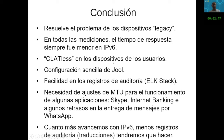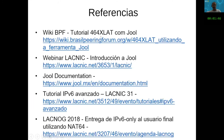The devices that users have don't need any kind of setup — they are CLAT-less, working through the virtual machine. The less interference with the user's machine, the better. The configuration with Jool is very simple, and auditing records in ELK are a great facility. We do need to allow some extra delay on the SPN and adjust the MTU, particularly for some applications — namely Skype, internet banking — and there is some delay in WhatsApp message delivery. The more devices are on IPv6, the fewer translation records we need.